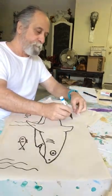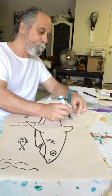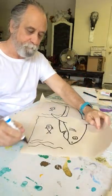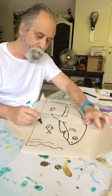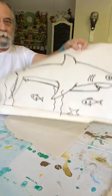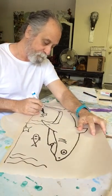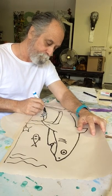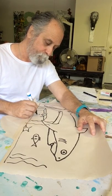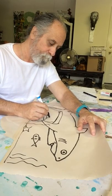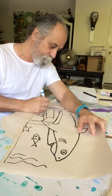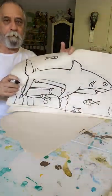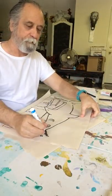We'll do one fish swimming behind it. You can add more stuff — you can even do the bottom of the ocean, maybe a starfish. Check this out — maybe do like a treasure chest sitting over there. And some bubbles.